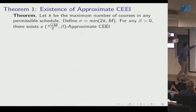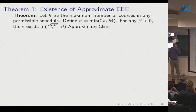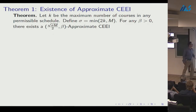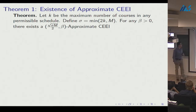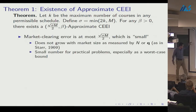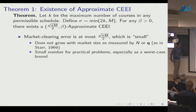The existence theorem: let k be the maximum number of courses in any permissible schedule (think k equals 5), and define sigma equals the minimum of 2k or m, where m is the number of courses. For any strictly positive beta, there exists an approximate competitive equilibrium from equal incomes that clears the market to within Euclidean distance of root(sigma * m / 2).